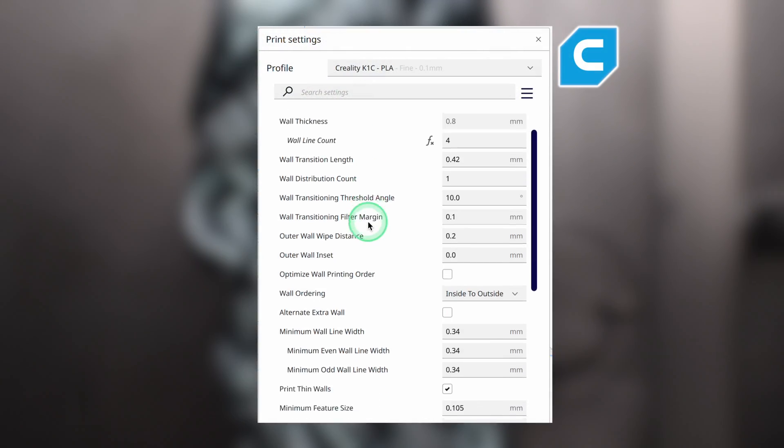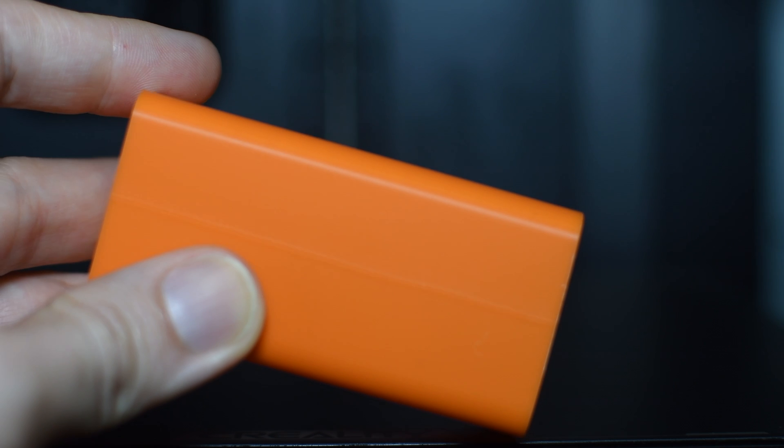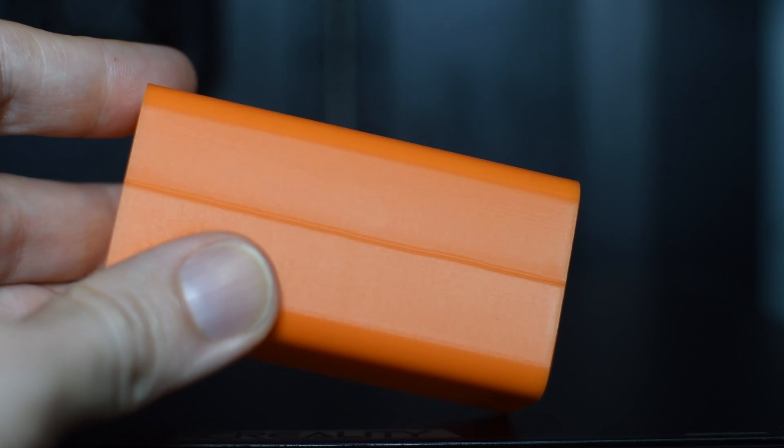In many slicers such as Cura you even have the option of smart hiding of the seam in such places. However, if the object is round the seam is exposed and often directly visible even if you have carefully calibrated your print settings.